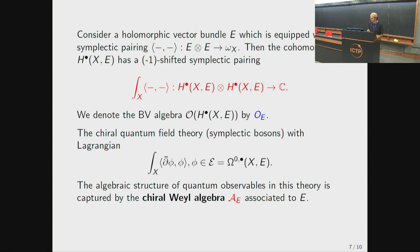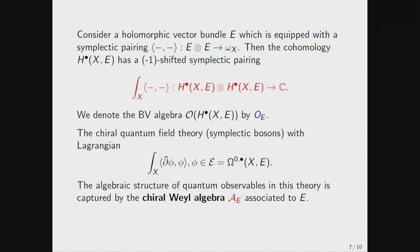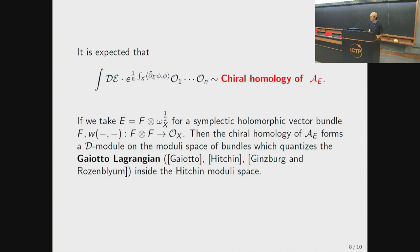Today I will focus on symplectic bosons. Consider a holomorphic vector bundle on Riemann surface X equipped with a symplectic pairing to the canonical line bundle. Then the shift-core homology group of E has a minus-one shifted symplectic pairing by integration along the Riemann surface. This minus-one shifted symplectic pairing induces a BV algebra structure on the polynomial algebra on this vector space. We can see the Cairo-Lagrangian theory with this free quadratic Lagrangian, and the algebra structure of the quantum observables is captured by the Cairo-Way algebra associated to E. Fiber-wise, it is exactly the usual symplectic boson vertex algebra.